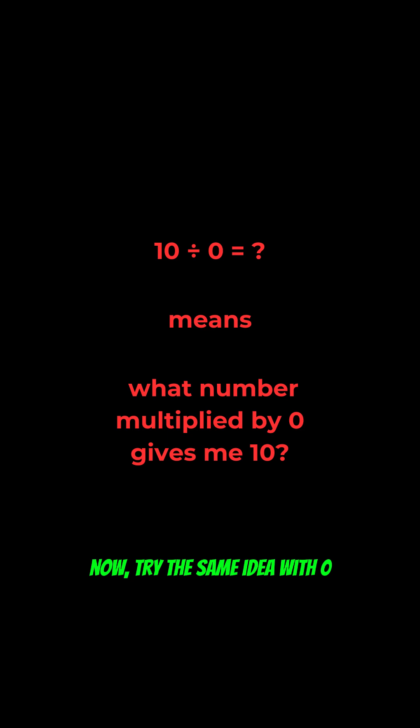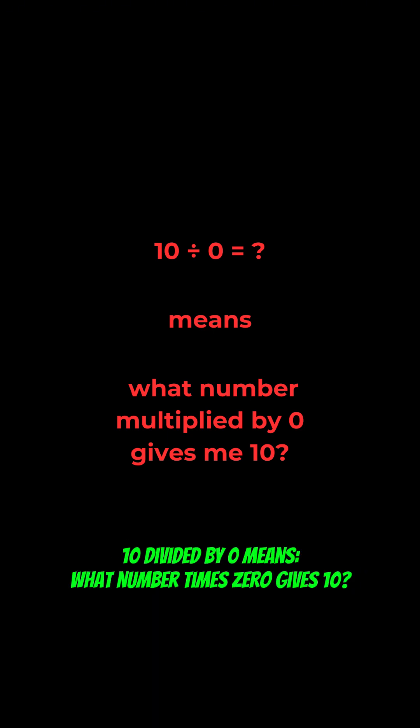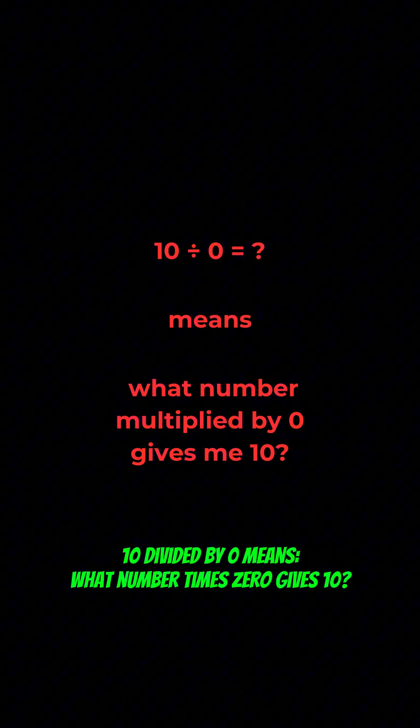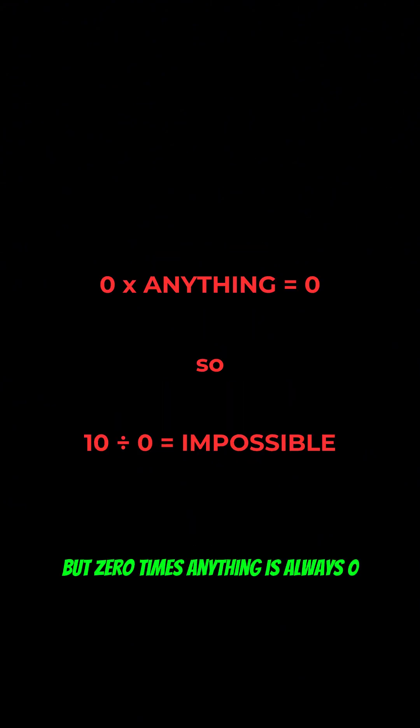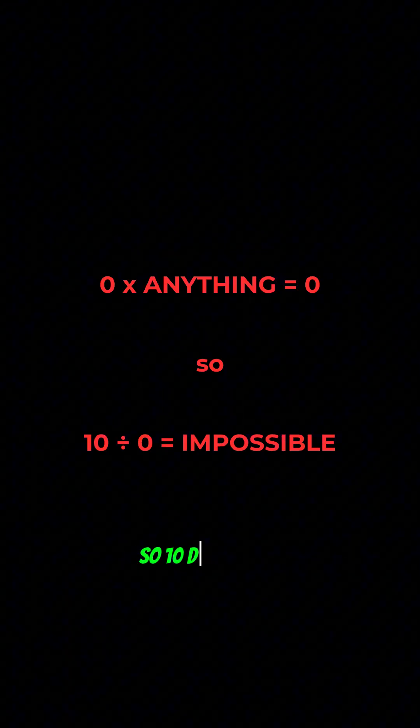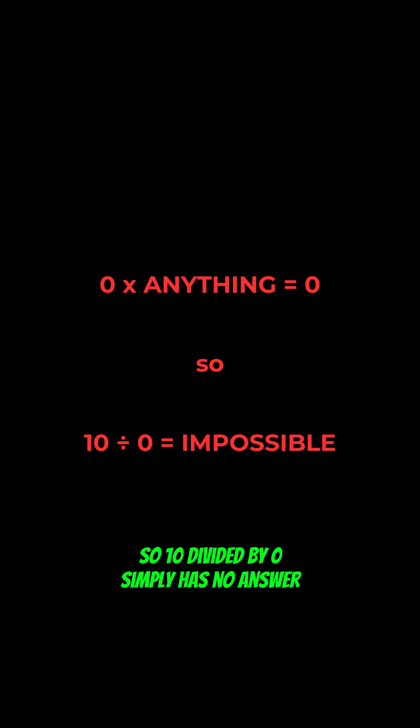Now try the same idea with zero. 10 divided by zero means what number times zero gives 10. But zero times anything is always zero. You can never get 10. So 10 divided by zero simply has no answer.